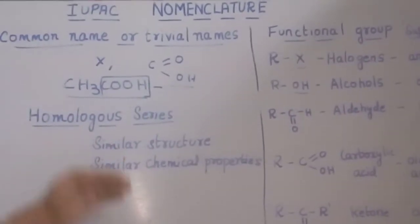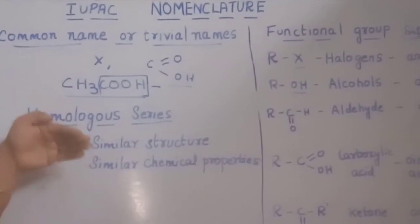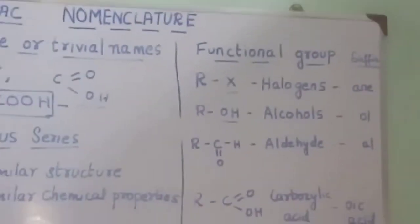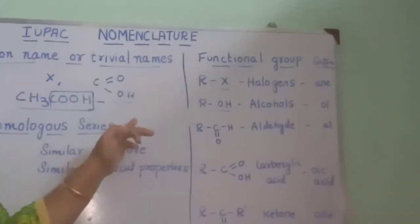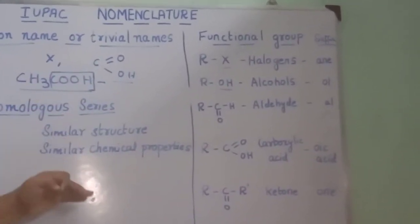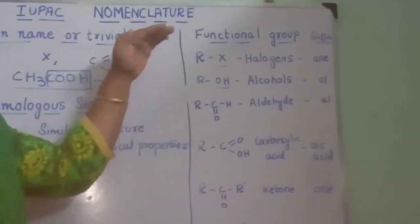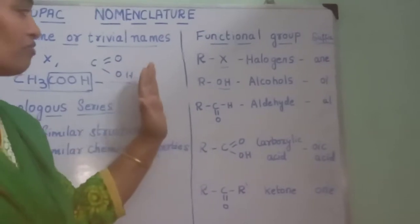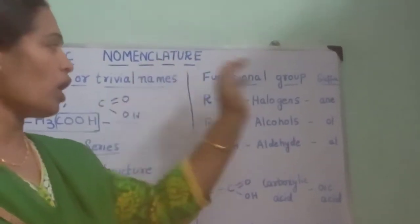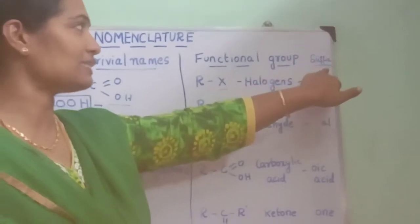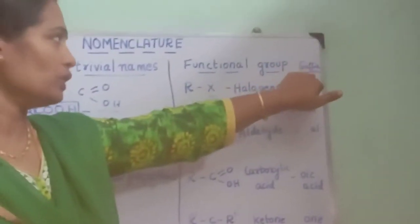We have to learn the set of rules. To make IUPAC nomenclature clear, the first thing we have to identify is the functional group. A functional group may be an atom or a group of atoms arranged in a specific manner which gives a characteristic chemical property to the compound. Let us see what functional groups we need to learn, and if a particular functional group is present, how the name of the compound will end — that is what we refer to as the suffix.